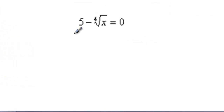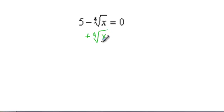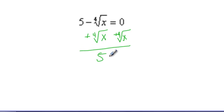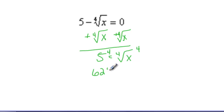Here we have 5 minus the 4th root of x equals 0. Since it's 5 minus the 4th root of x, I'm actually going to add the 4th root of x to both sides, just because I want it to be positive on the right side. That's going to leave me with 5 equals the 4th root of x.